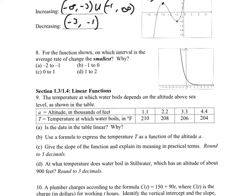For number eight, we want to find which interval has the smallest average rate of change. This is an exponential decay function, and the rate of change decreases as we move to the right. For example, between negative two and negative one the change is large, but between one and two it's much smaller. So the smallest rate of change is on the farthest right interval, from one to two.